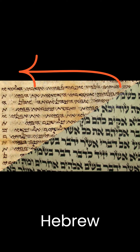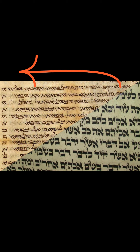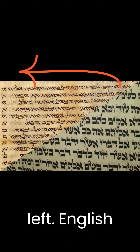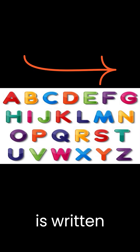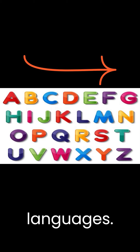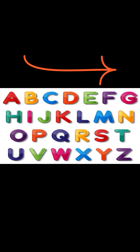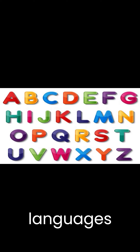Hebrew letters. If you look at Hebrew letters, you see the alphabet is written from right to left. English is written from left to right, like most other languages. However, if you look at other languages, like Chinese, Chinese is actually written top to bottom.